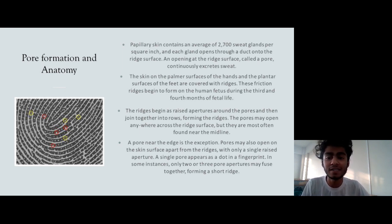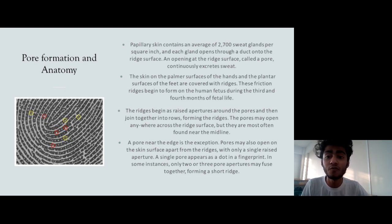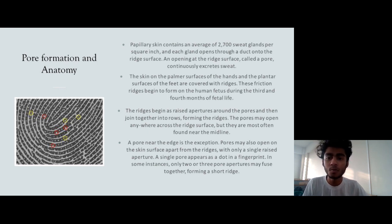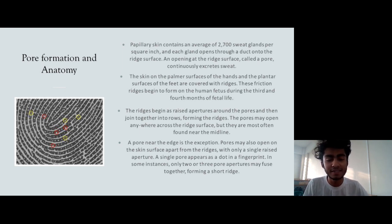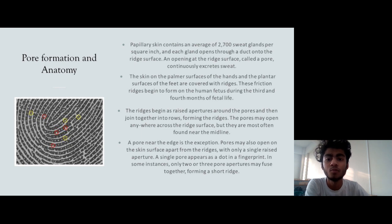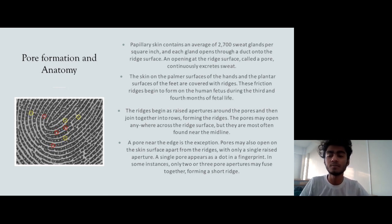The skin on the palmar surface of the hands and the plantar surfaces of the feet are covered with ridges. These ridges are present not only on the hands but also on the palm surfaces. These ridges begin to form during the third and fourth months of fetal development during pregnancy. The ridges appear as apertures around the pores. The pores may open anywhere across the ridge surface, but they are mostly found near the midline of the ridges.